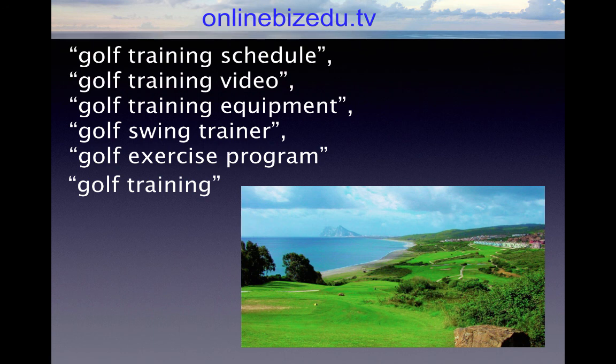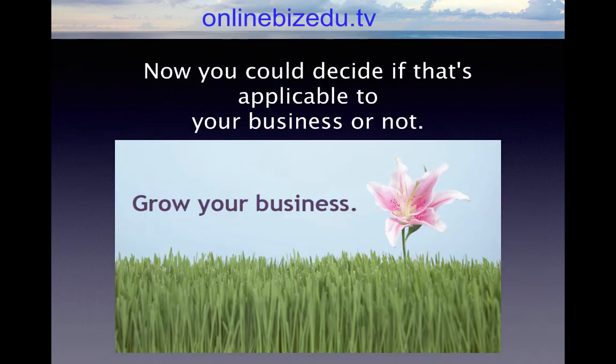It's going to show related rising searches in the far right corner — golf training schedule, golf training video, golf training equipment, golf swing trainer, golf exercise program. All of these are ideas for keywords that you could do additional research on or create content around, and this is all within Microsoft Excel just by typing it in.